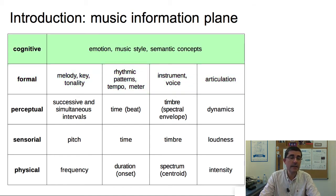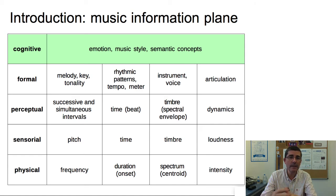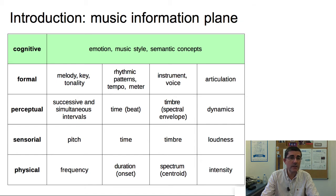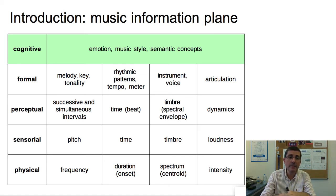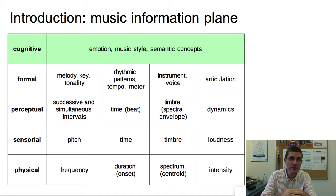Finally, we can reach the highest level — the cognitive level — the level that relates to us humans in a very subjective way, and how we listen to music and what issues are relevant for us in the interaction with music. At this level, the columns are no longer valid; there is interaction between all these different concepts. We can talk about emotion, musical style, or semantic concepts that clearly integrate all the other levels of description. These are ways of describing music that are clearly more generic, subjective, and cultural — a level that would be hard to reach, and in this class we are definitely not going to talk much about that.